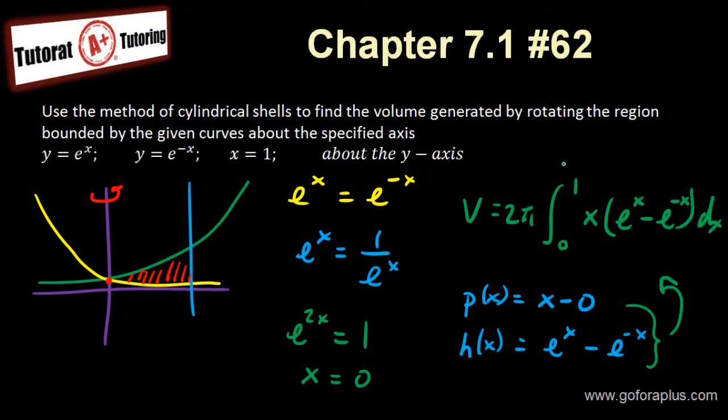Now, I want to evaluate this integral. So let's do it on the next page. I have volume equals 2 pi from 0 to 1 x times e to the x minus e to the minus x dx. So I want to multiply this out.